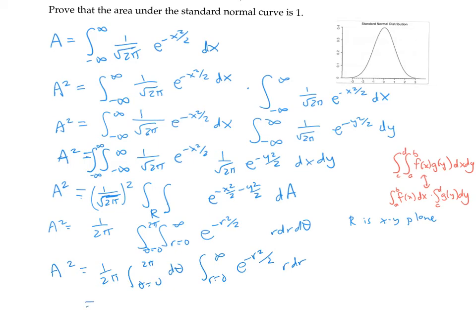First integral is just θ between 2π and zero. And for the second integral, the integral of e to the minus r squared over 2 times r dr, I could do a u substitution, but I think I'm just going to do a u substitution in my head. In other words, use a guess and check method.